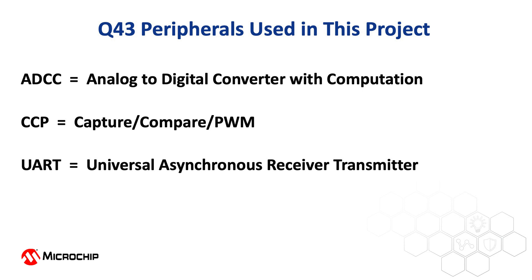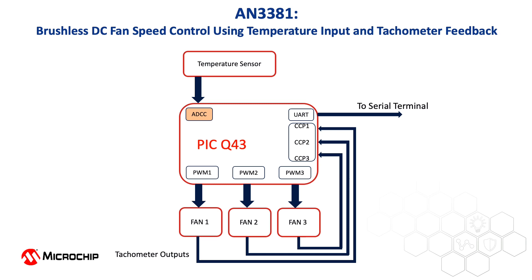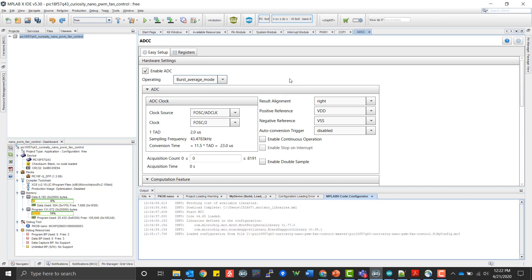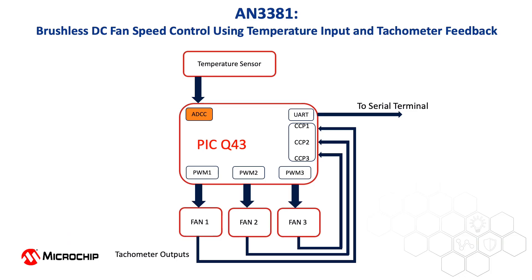Let's go over them one at a time using a block diagram of this project. The ADCC is an Analog to Digital Converter with Computation. It has built-in computational features that provide post-processing functions such as oversampling, averaging, and low-pass filtering. In this particular project, the ADCC peripheral is being used in burst average mode, where a single ADC trigger event causes the ADC to accumulate samples until the number of samples matches the value in the ADC repeat setting register. The accumulated samples are then averaged, and the temperature is calculated using the simplified beta parameter equation shown on page 13 of the app note.